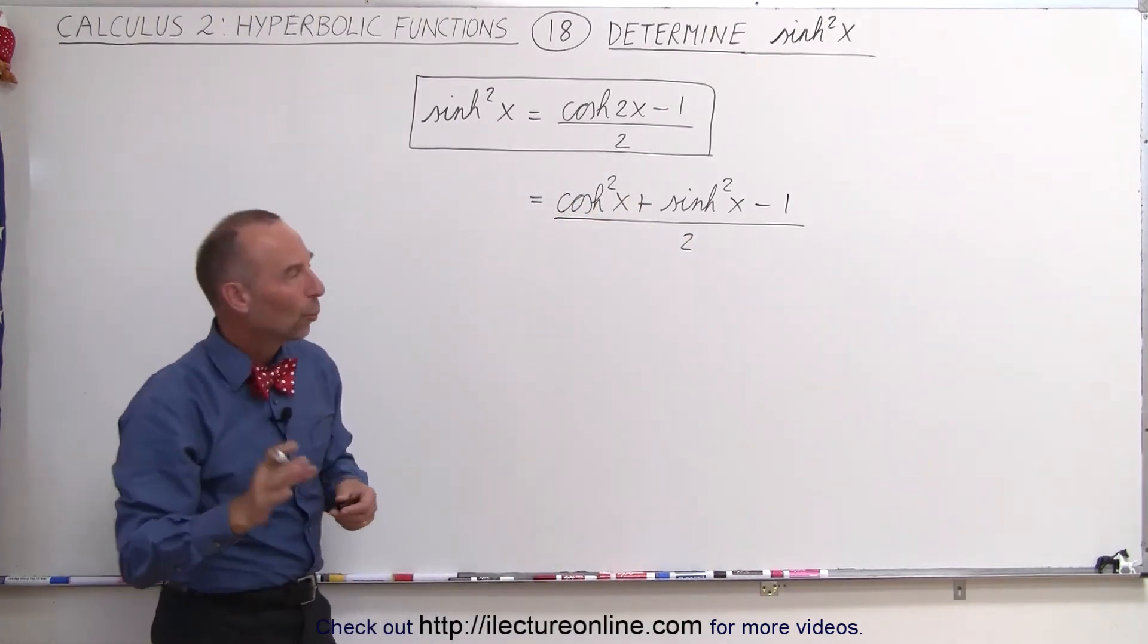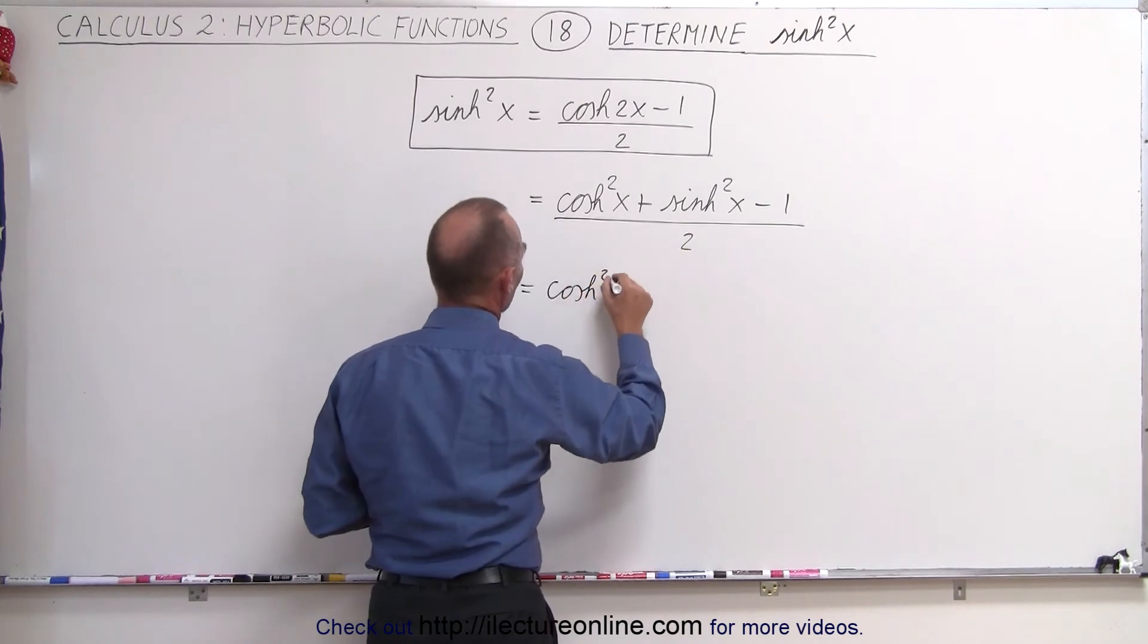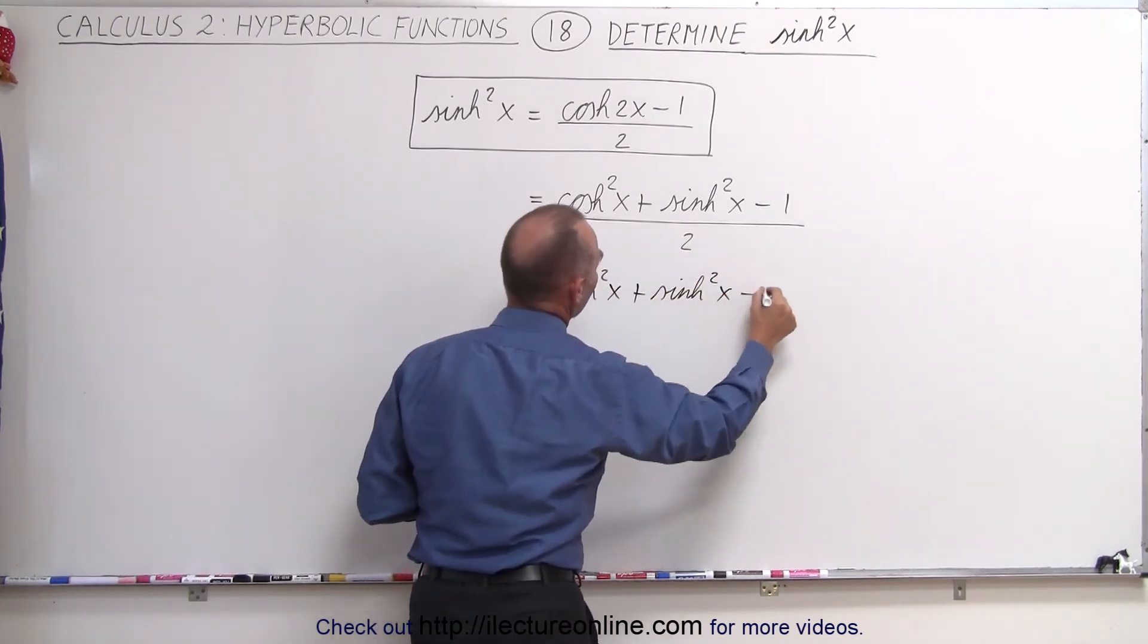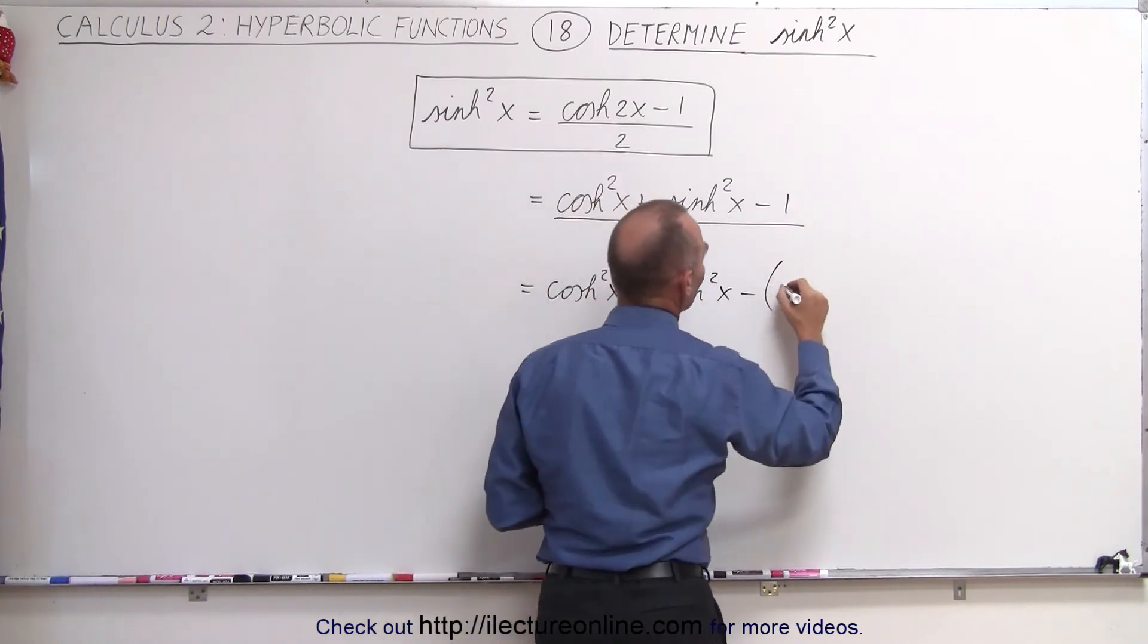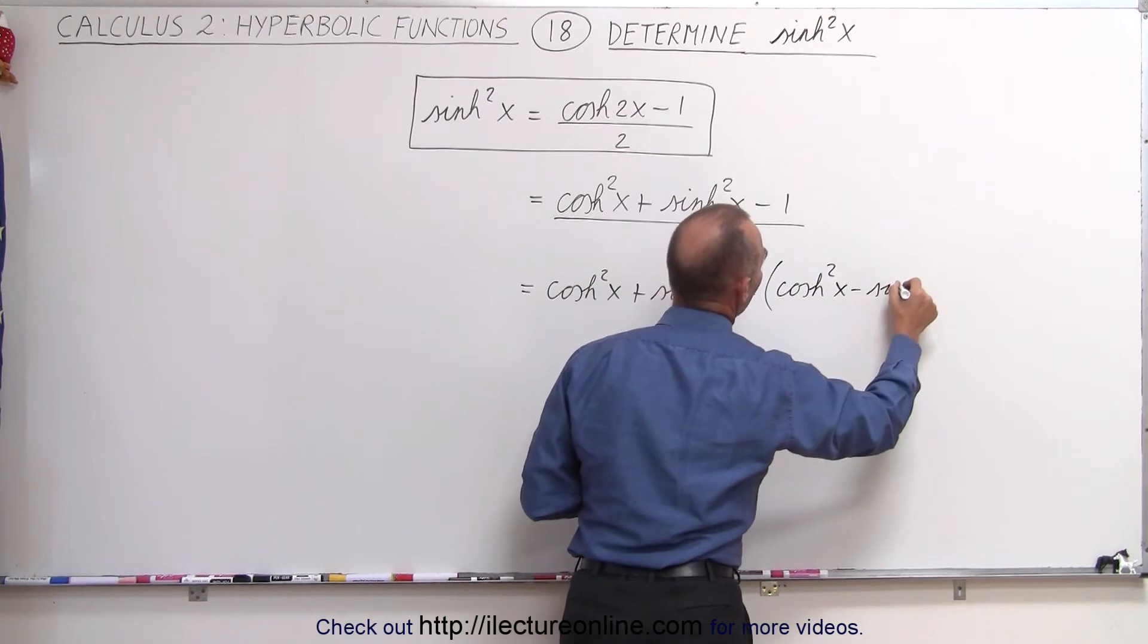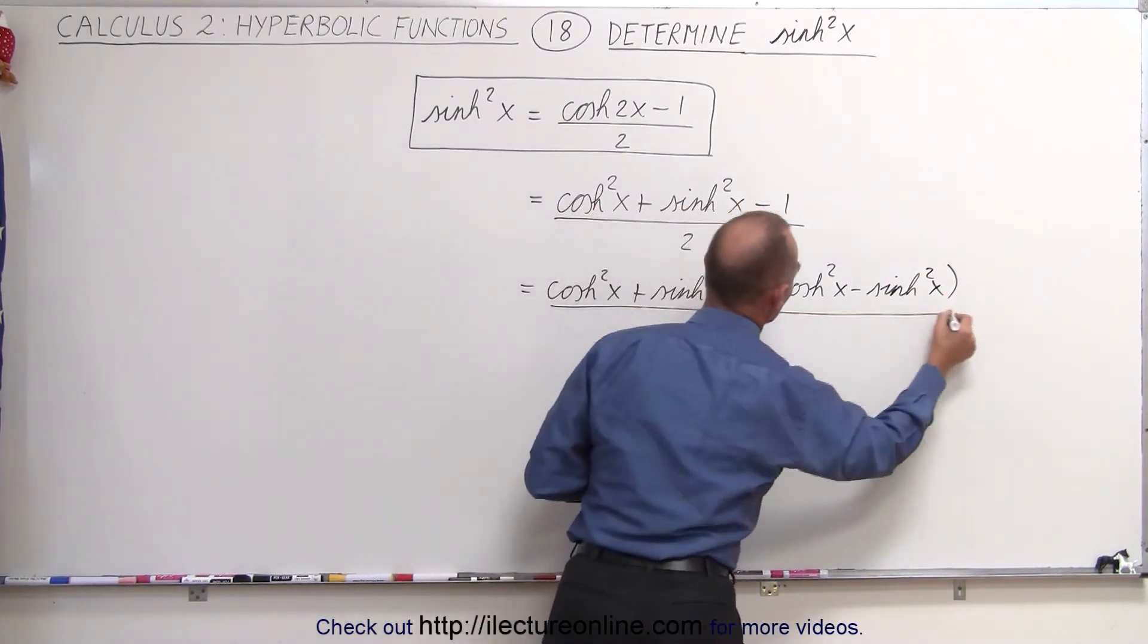Now we're going to rewrite the 1. We're going to write this as the hyperbolic cosine squared of x plus the hyperbolic sine squared of x minus—and 1 can now be written as the hyperbolic cosine squared of x minus the hyperbolic sine squared of x—and the whole thing divided by 2 still.